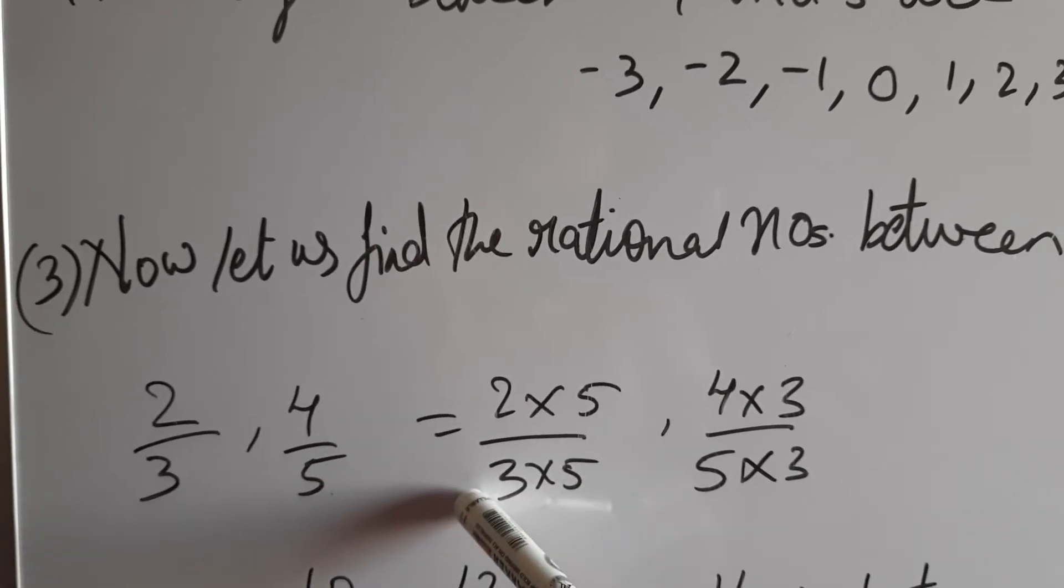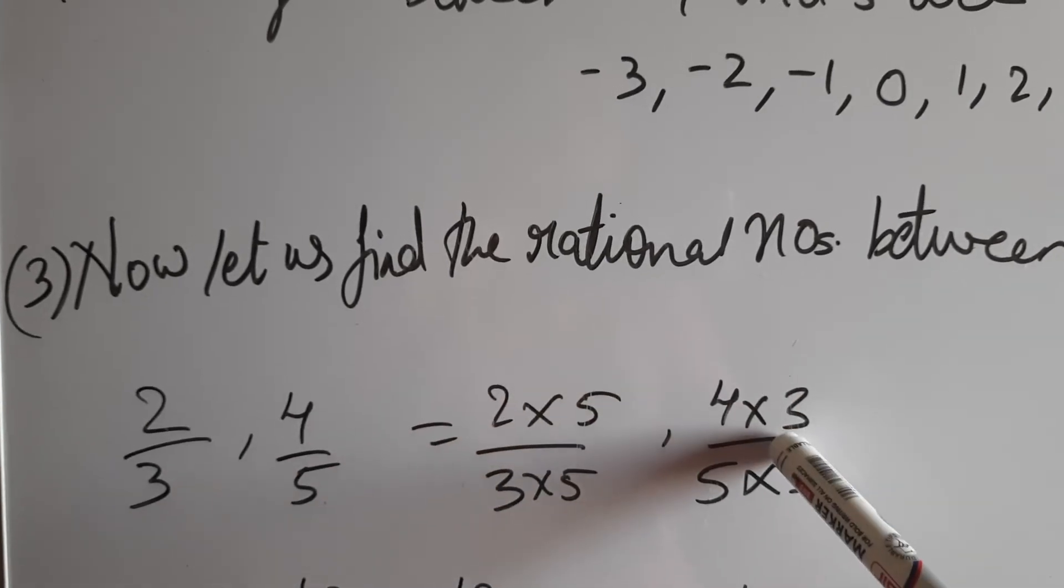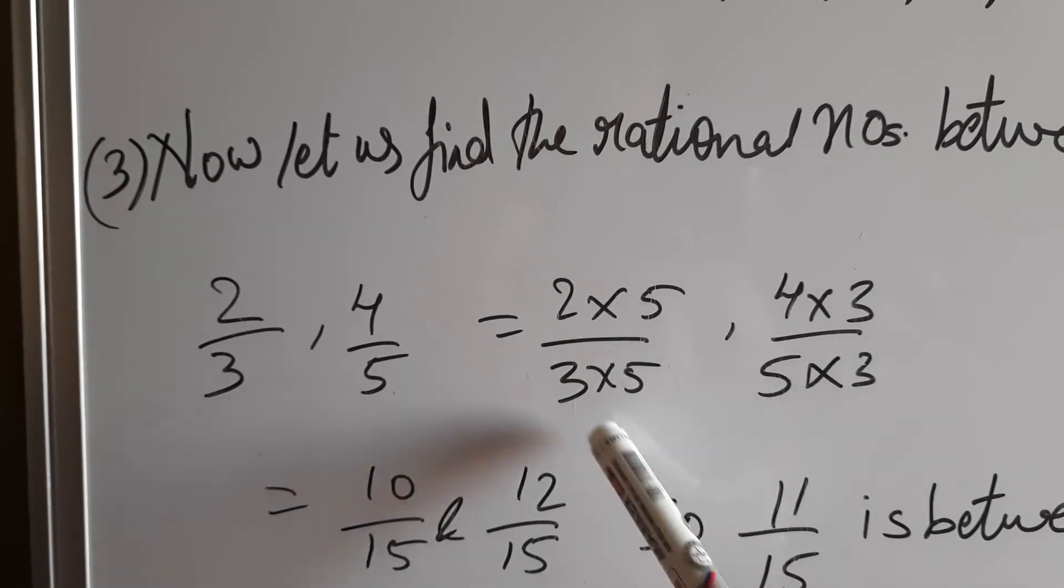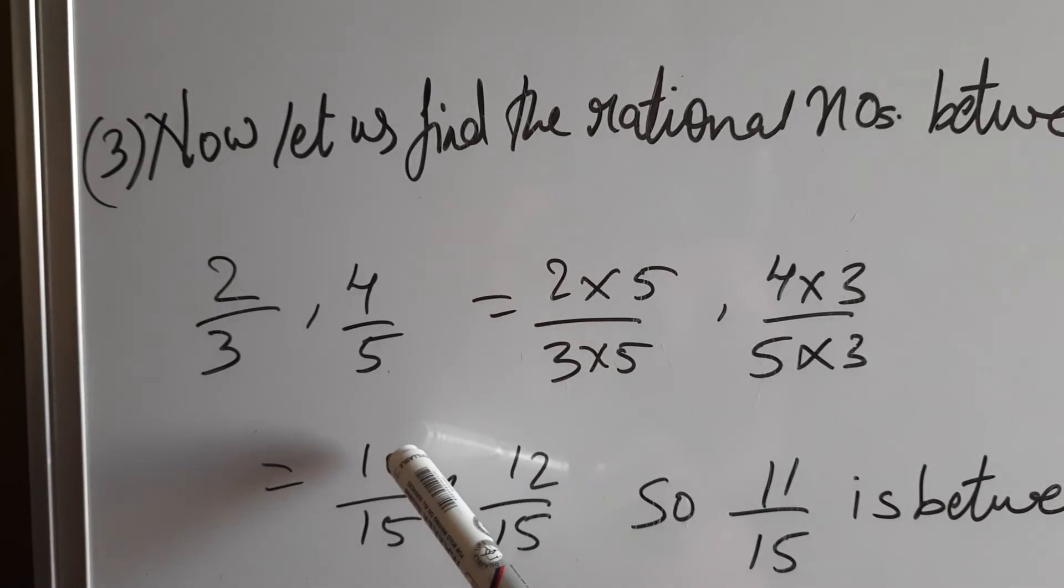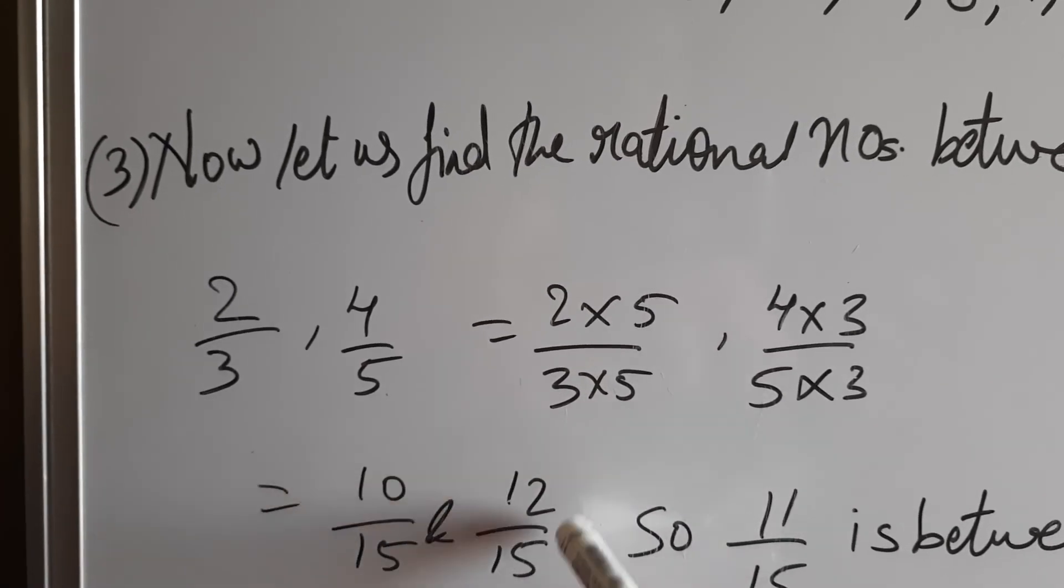So we cross multiply and we get 2 into 5 upon 3 into 5, 4 into 3, 5 into 3. We get 10 upon 15 and 12 upon 15. Same denominator. So we can find out which are the numbers between them. So 11 upon 15 is between 10 upon 15 and 12 upon 15.